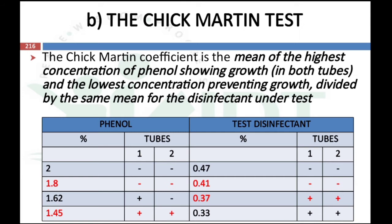To determine the Chick-Martin coefficient we find two ratios: phenol and disinfectant. The ratio of phenol is the mean of the highest concentration showing growth and the lowest concentration preventing growth. In both tubes, the concentrations of phenol preventing growth are 2% and 1.8%; we select the lowest, which is 1.8%. The highest concentration showing growth in both tubes is 1.4%. So the phenol ratio is (1.8 + 1.4) / 2.